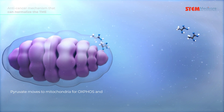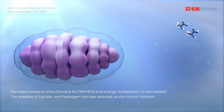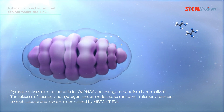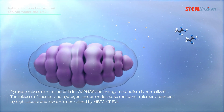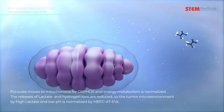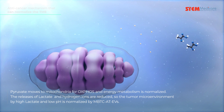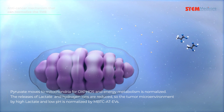An elevated level of LDHB driven by PGC-1-alpha and MBTC-80-EVs converts lactate to pyruvate in cancer cells. Pyruvate moves to the mitochondria for oxidative phosphorylation, energy metabolism is normalized, and the releases of lactate and hydrogen ions are reduced, so the tumor microenvironment of high lactate and low pH is normalized by MBTC-80-EVs.